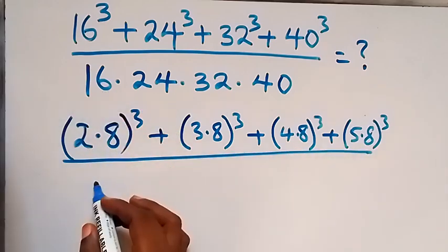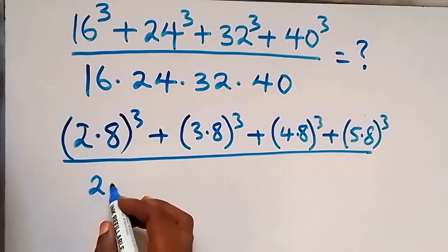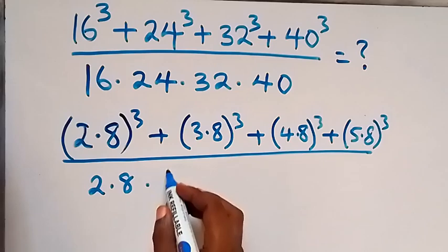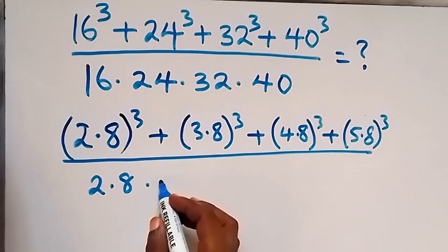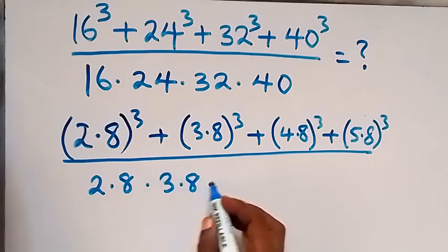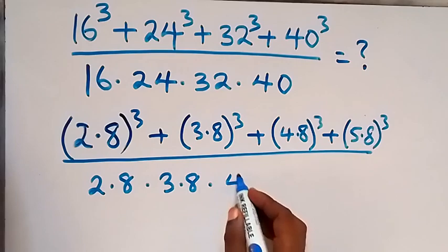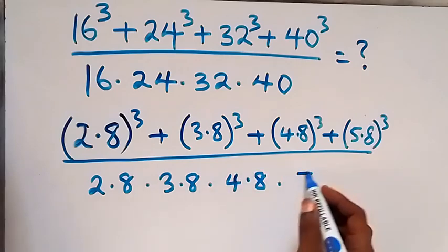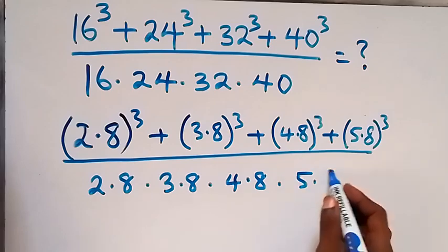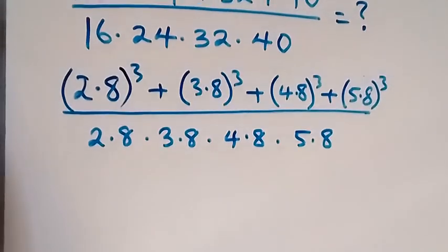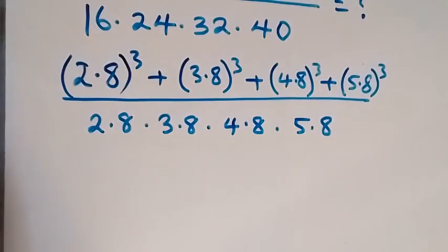From the denominator, we can separate 16 as 2 times 8, then times 24 as 3 times 8, then times 32 as 4 times 8, and times 5 times 8.